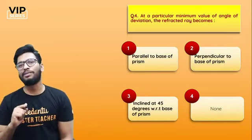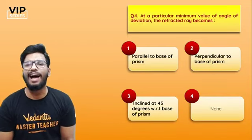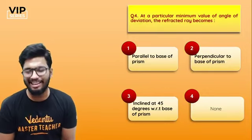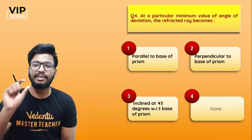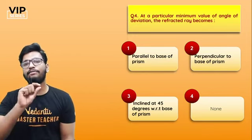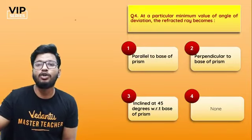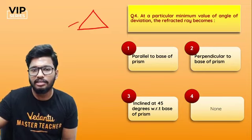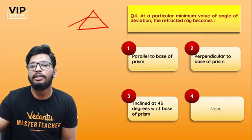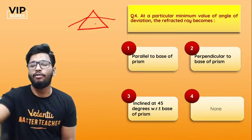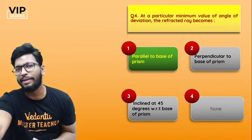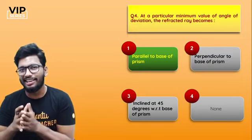Fourth question: at a particular minimum value of angle of deviation, the refracted ray becomes — parallel to the base of the prism, perpendicular to it, or inclined at 45 degrees? If the angle of deviation is minimum, the refracted ray will be parallel to the base of the prism. The answer is option A — parallel to the base of the prism.